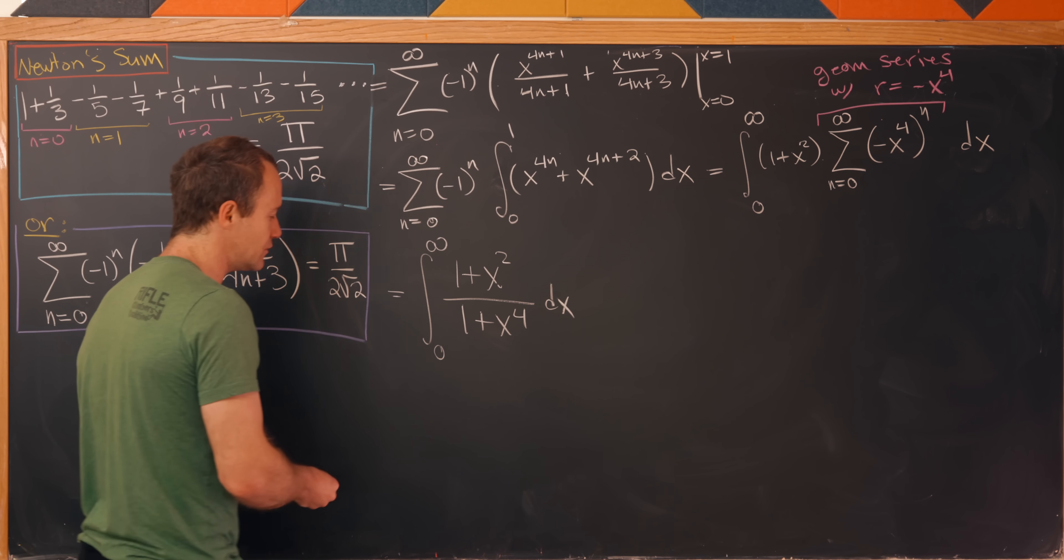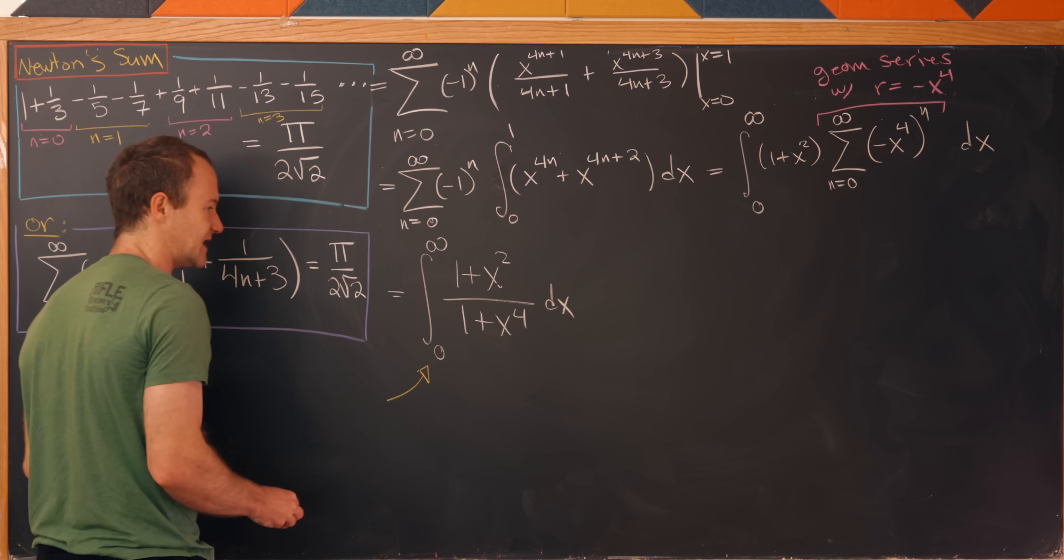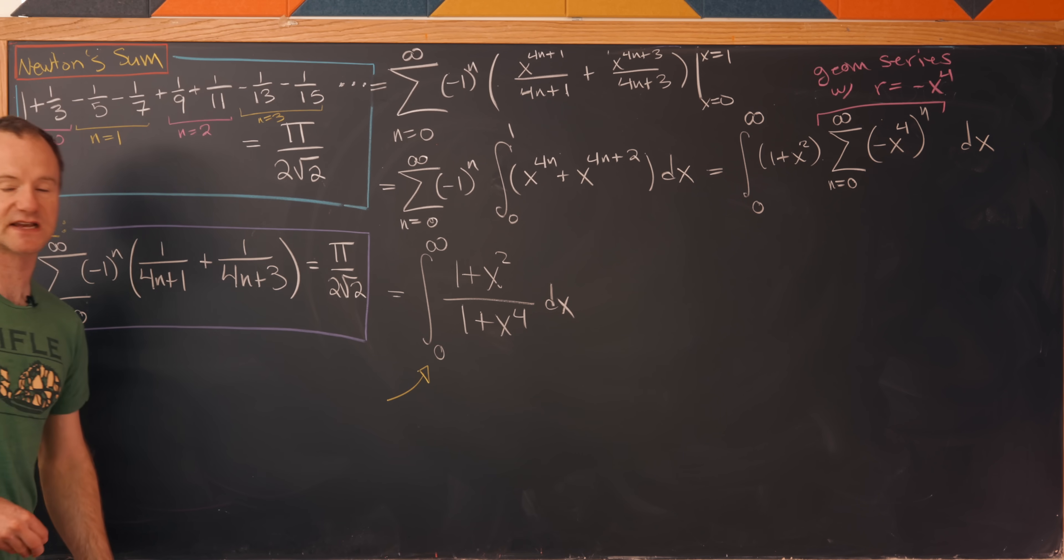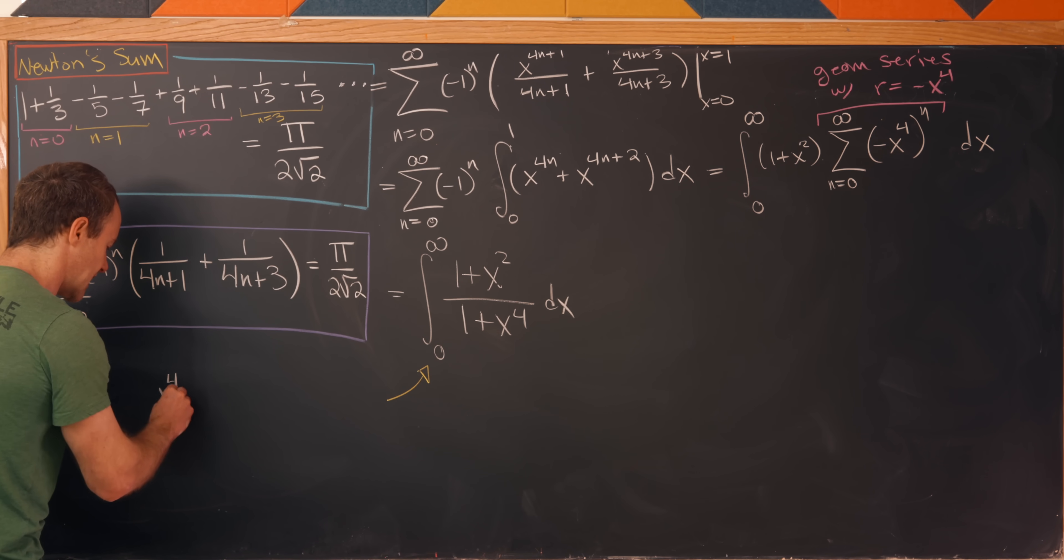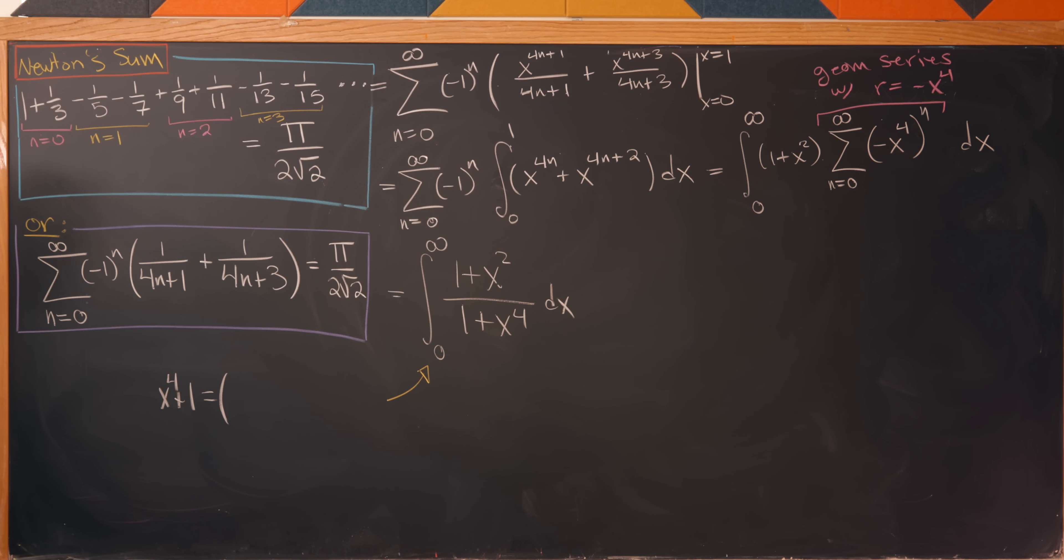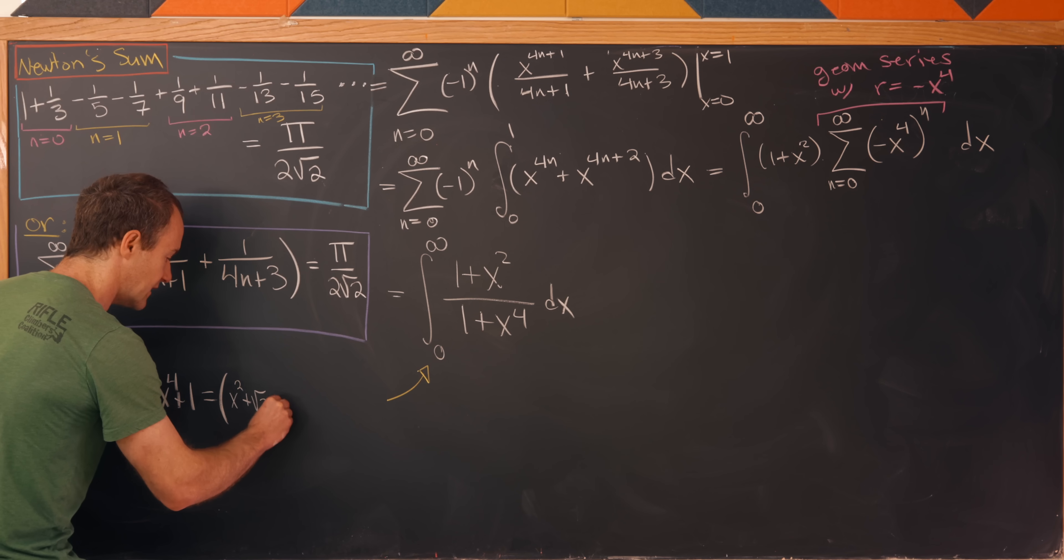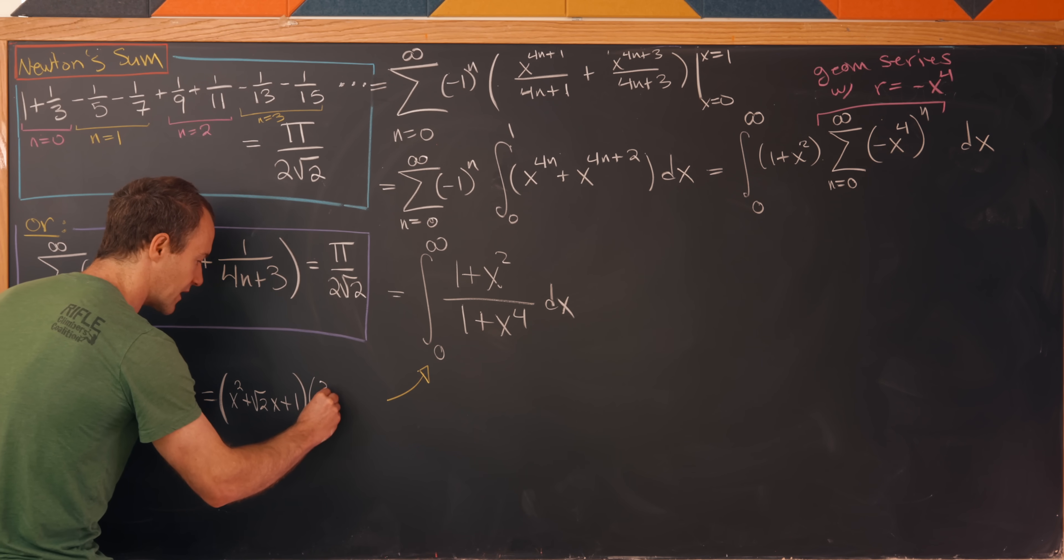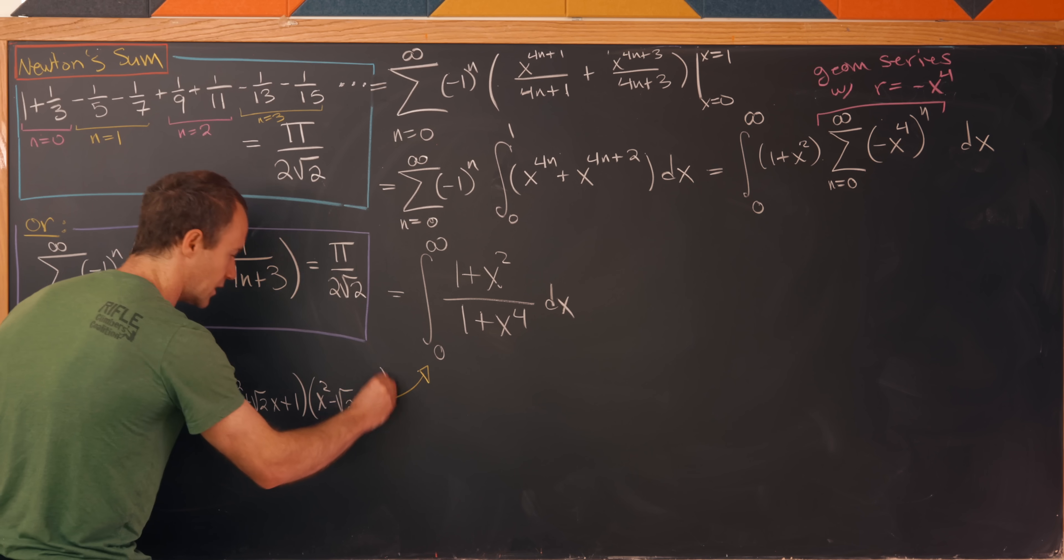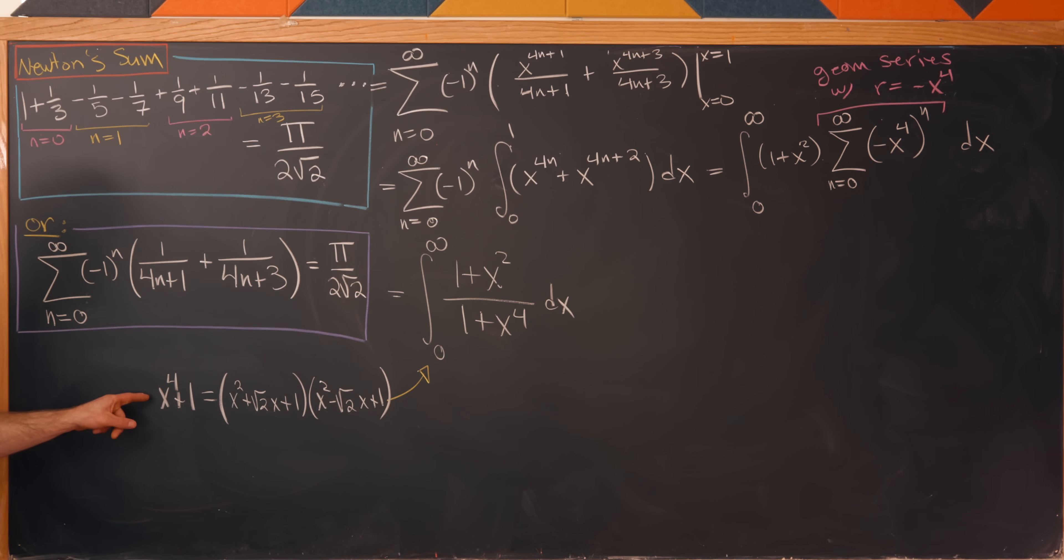Now I'm going to use a little bit of a trick with the factorization of 1 + x^4 to help me simplify this integral. I'm just going to present this as an observation, but you can multiply it out to make sure this works. x^4 + 1, in other words 1 + x^4, can be factored as (x^2 + √2·x + 1) and then (x^2 - √2·x + 1). Multiplying that out, you will get x^4 + 1. I won't do that, but that's fairly easy to show.